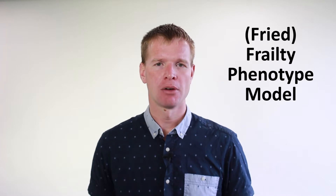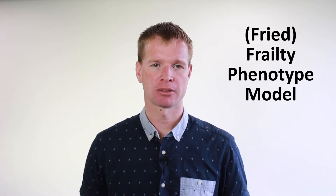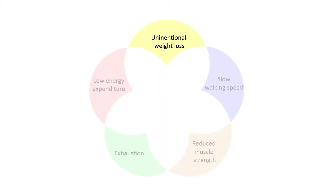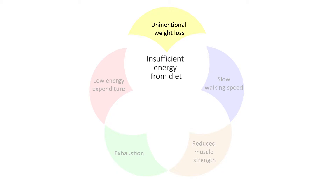The Phenotype Model focuses on 5 specific components. Unintentional weight loss reflects the status of the body in terms of energy intake and energy expenditure. The critical consideration here is unintentional, as losing weight because of a deliberate diet is not part of this criteria. Instead, it is concerned with people who typically reduce how much they eat and end up losing weight because of that, which can be considered a bad thing for older adults.